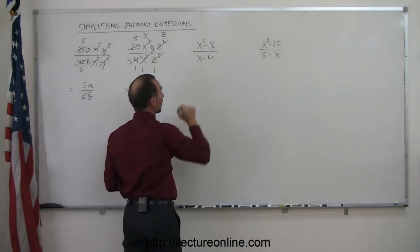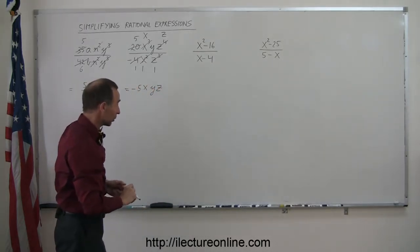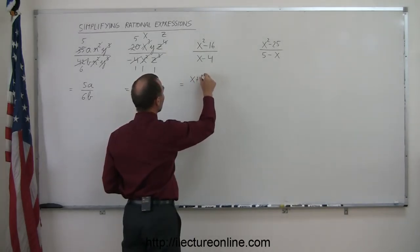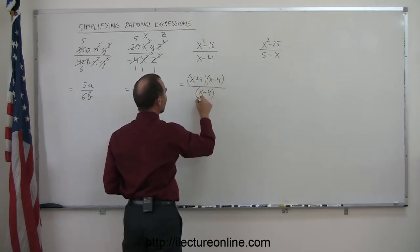And if I look at that, I recognize that as being the difference of squares so I can write that as a product of two binomials. Matter of fact, I can write this as x plus 4 times x minus 4. And of course, I still have my denominator x minus 4.